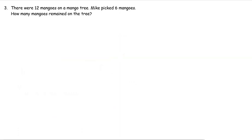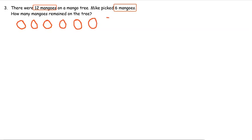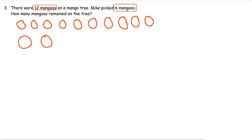Our final example: there are twelve mangoes on a mango tree. Mike picked six mangoes. How many mangoes remained on the tree after Mike had picked six? Let's draw the mangoes here — one, two, three, four, five, six, seven, eight, nine, ten.